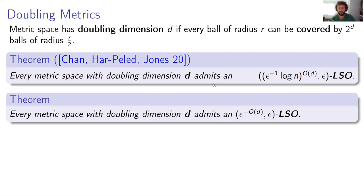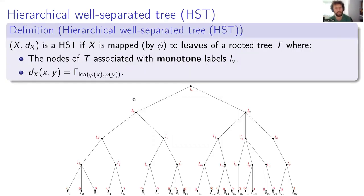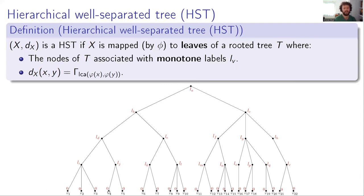To construct this, we used what are called hierarchical well-separated trees, or HSTs. A metric space is an HST if you can map all points into the leaves of a tree t, where the root is at the top and leaves at the bottom. Each internal node has a label, and these labels are monotone — smaller as you go deeper. The distance between two points is simply the label of their least common ancestor. So the distance between V4 and V3 is the label LD of their common ancestor, and similarly for V5 and V6.